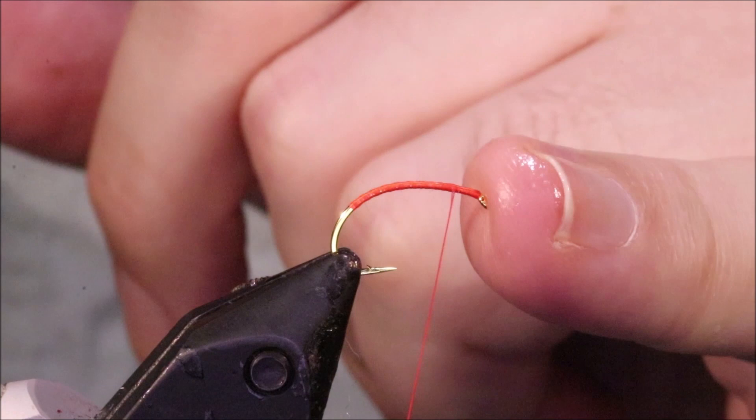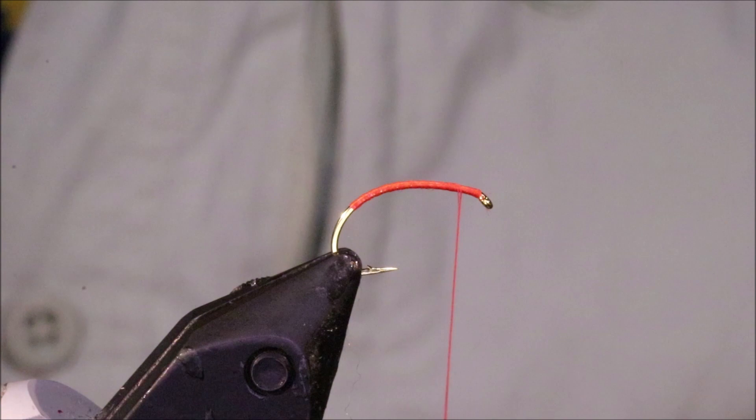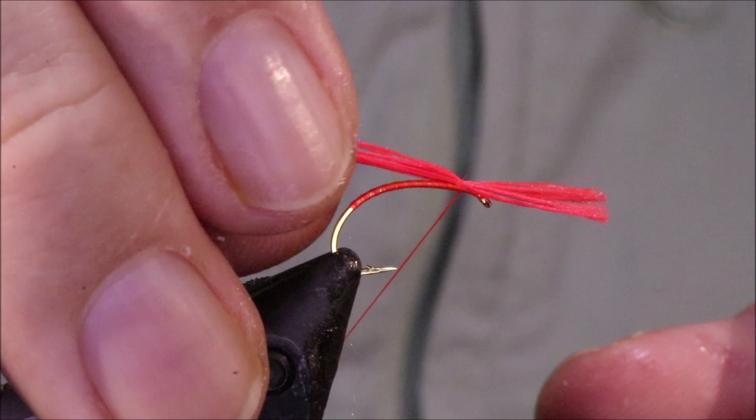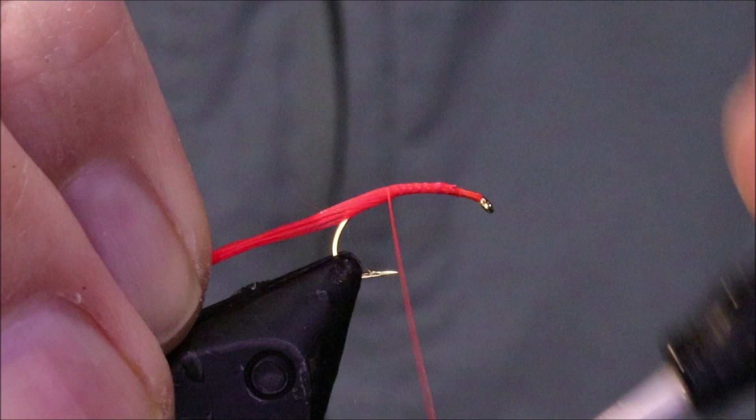So I've got my hoopla vise, this is a Camazan B100G, size 12, and I've run on some Uni 8-0 in fluorescent fire orange. You can tie it with red thread as well but I like to use the fire orange to boost the brightness.